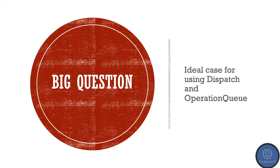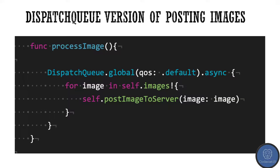So let's have a look at an example. Here I have an example of Dispatch Queue. You can see I can just add one line of code and put my operations inside the closures.